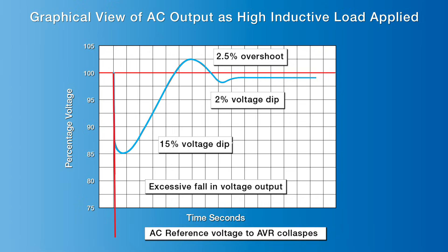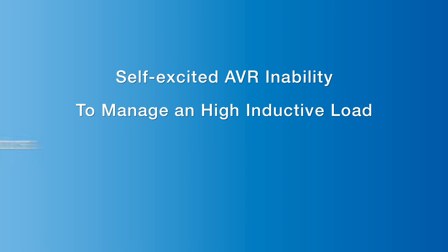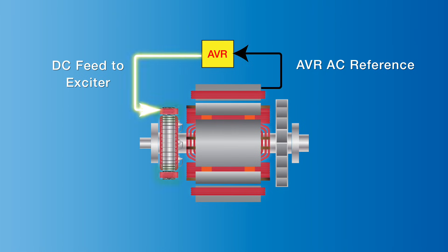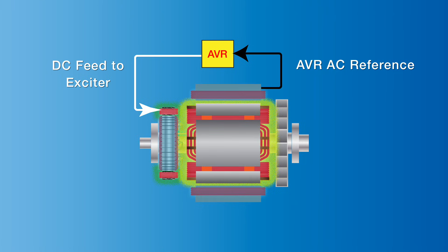When choosing a generator, the system designer takes into account a self-excited generator's inability to manage an inductive load mainly comprising electric motors. As long as the AC reference voltage from the stator to the AVR stays above 60 to 70%, the DC feed to the exciter will continue feeding the main rotor, generating a magnetic field to maintain AC output from the generator to the load.